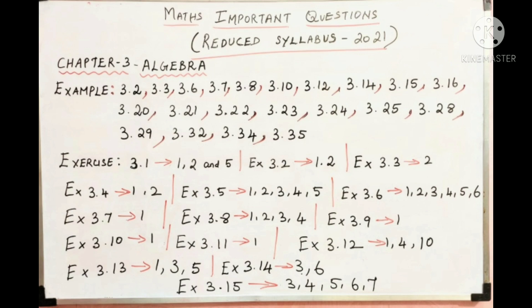Algebra is a lengthy chapter. Examples number 3.2, 3.3, 3.6, 3.7, 3.8, 3.10, 3.12, 14, 15, 16, 20, 21, 22, 23, 24, 25, 28, 29, 32, 34 and finally 3.35. So examples are important. Let us study this example.